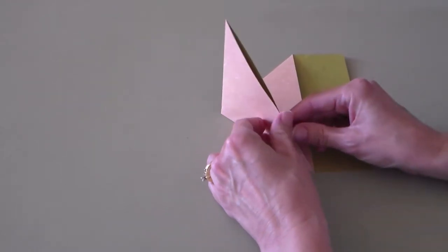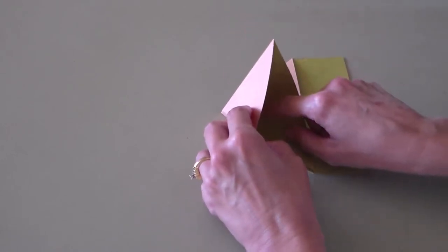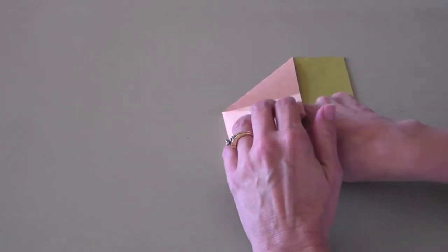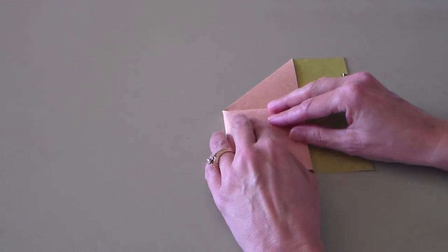Lift the last fold about halfway up like this and then open up the triangle with your finger. Stick your finger all the way in to the point here to open up the triangle. This is called a squash fold.